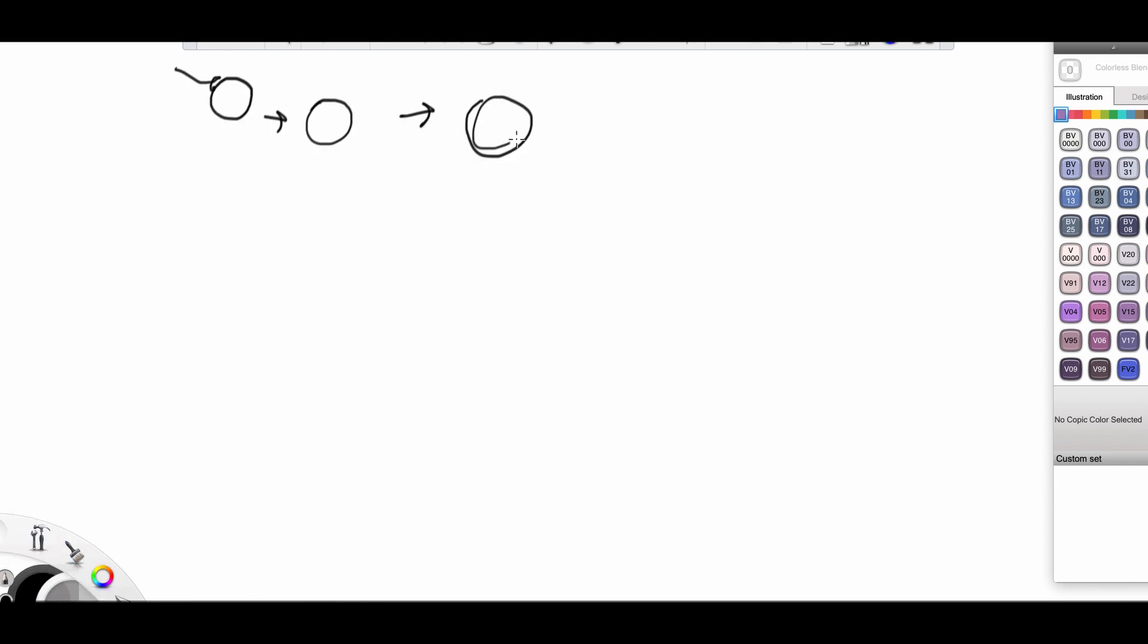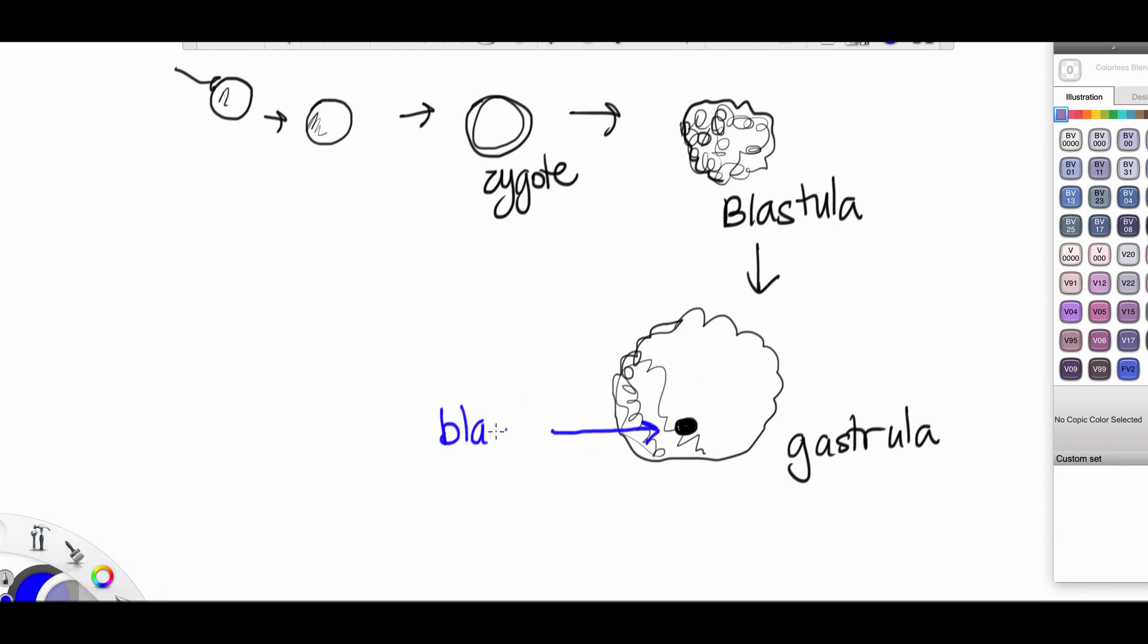When animals make this zygote and eventually a blastula and a gastrula, a hole forms, and that hole is known as a blastopore. It's known as the first hole.